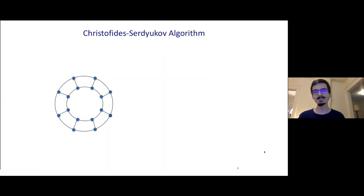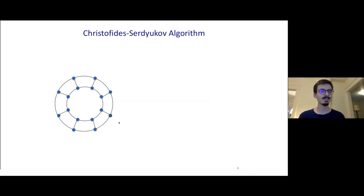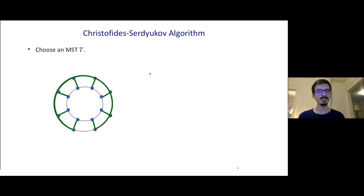I want to tell you a little bit about what we did, and to do that I want to show you the old algorithm, Christofides' algorithm. Here's an example graph we might want to find a TSP tour on. In general, there are weights on the edges corresponding to the distances between the cities. Here, think of each edge as having weight one, and the distance between two cities is given by the shortest path between those two endpoints. First, you choose a minimum spanning tree T, and this makes the graph connected.